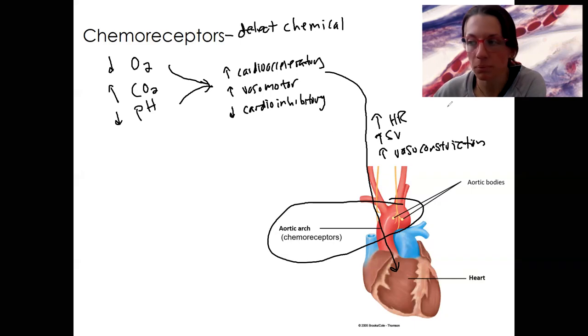This is going to allow for those tissues to get what they need, which is fresh blood. Get that waste out of there, the waste being hydrogen ions and carbon dioxide, and supply fresh oxygen.